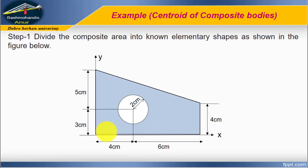The first step is to divide the composite area into known elementary shapes. Here we have a general composite shape, and we want to break it down into simpler shapes that we can work with easily.